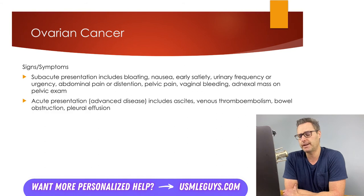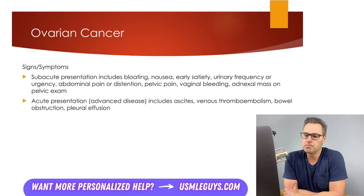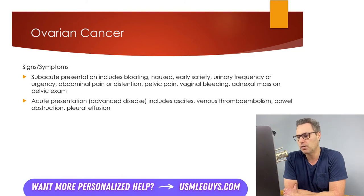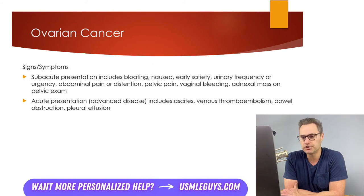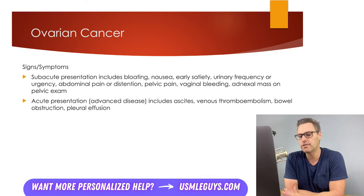The signs and symptoms of ovarian cancer can vary quite drastically. Some patients will be completely asymptomatic and the cancer will be found incidentally on imaging, during surgery, or during a pelvic exam. Others may present with non-specific symptoms: bloating or abdominal distension, nausea, early satiety, urinary frequency or urgency, abdominal or pelvic pain, or vaginal bleeding. When ascites, venous thromboembolism, bowel obstruction, or pleural effusions are present, it is likely a sign of advanced disease.